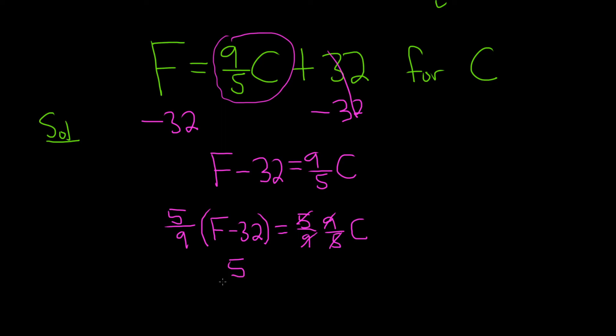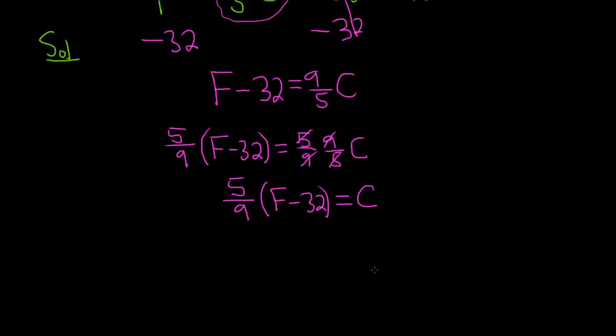So we have 5 ninths, parentheses, f minus 32 is equal to c. And that would be a good answer. However,